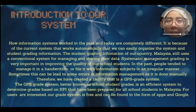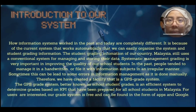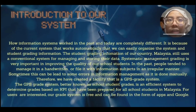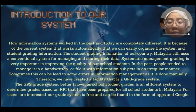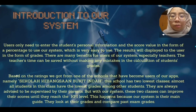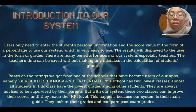Therefore, we have created a facility that is a GPS grade system. The GPS grade system, better known as a school student grade, is an efficient system to determine grade based on KPI that have been prepared for all school students in Malaysia. Our grade system is free and can be found in the form of apps on Google. Users only need to enter their student personal information and the score value in the form of percentage to use our system, which is very easy to use.